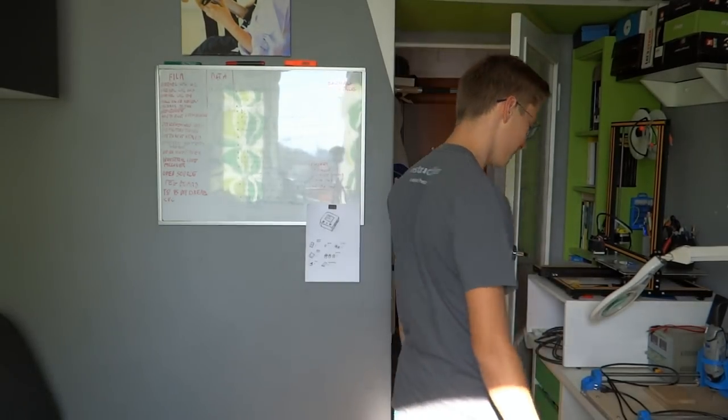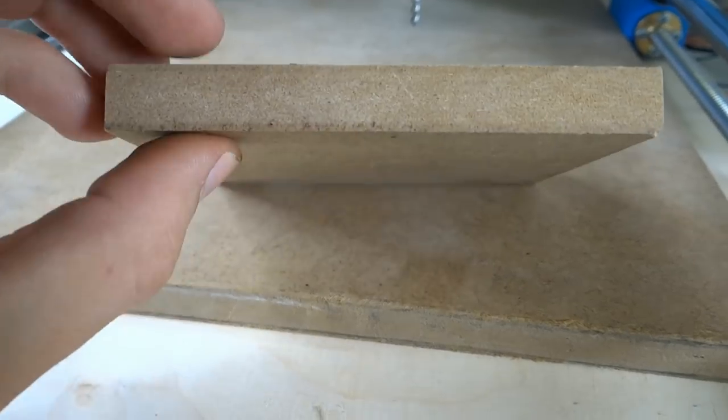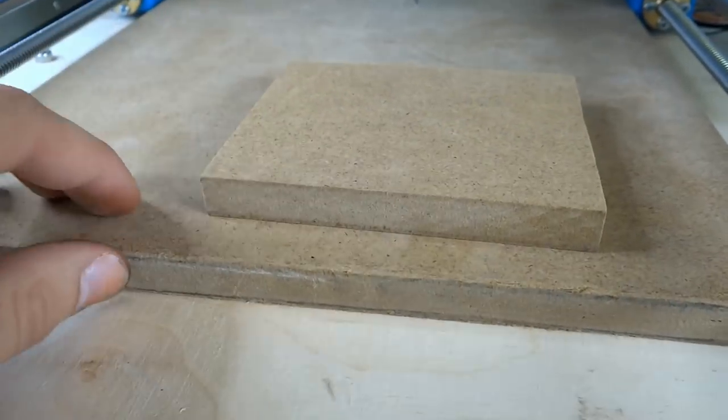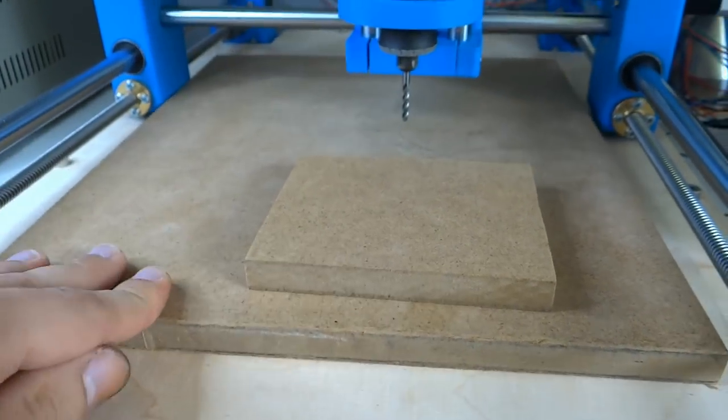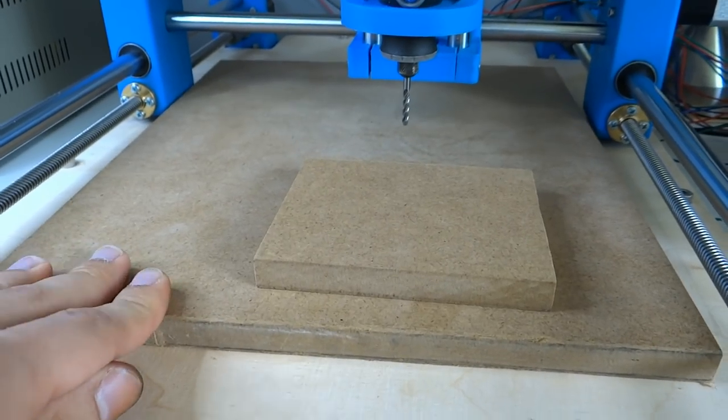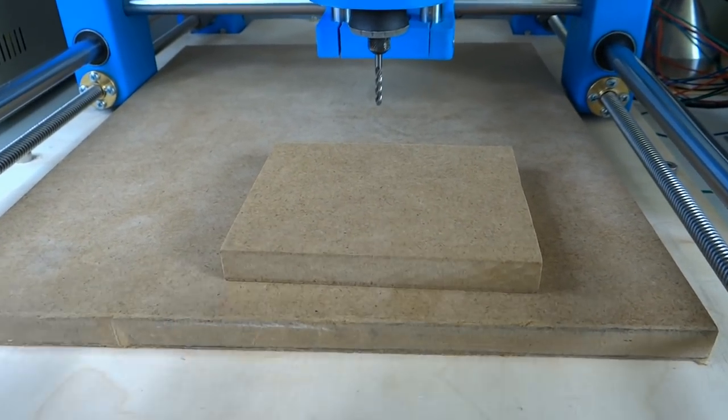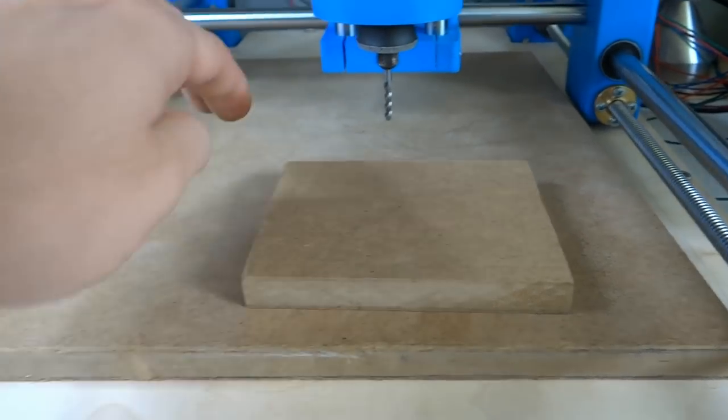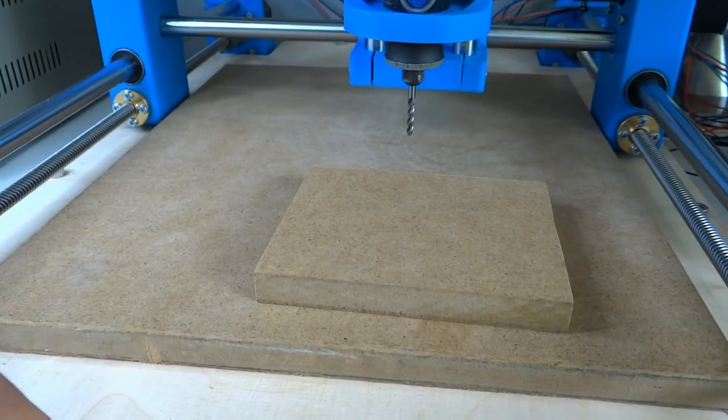So in a minute we will start milling, but firstly we have to put wasteboard on my machine. Because I want to mill all the way through the material, I will put an MDF wasteboard on the table and stick it with double-sided tape. I know it's not a good idea and I should use screws, but as for the test it should be fine.